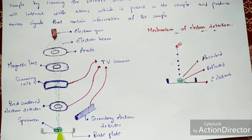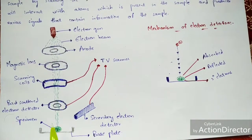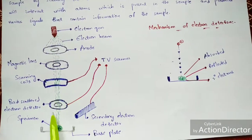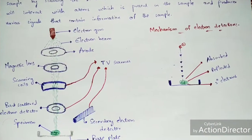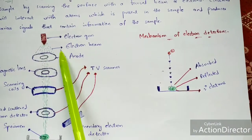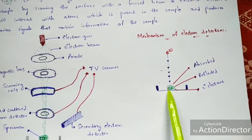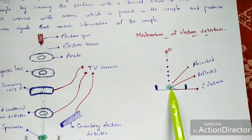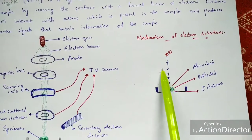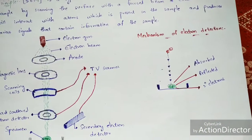Upon the base plate there is a specimen — any type of sample which you take. Electrons are allowed to fall upon this specimen. What happens immediately is that the electrons may either be absorbed, or reflected, or they may form secondary electrons. This is the mechanism which you have to remember.